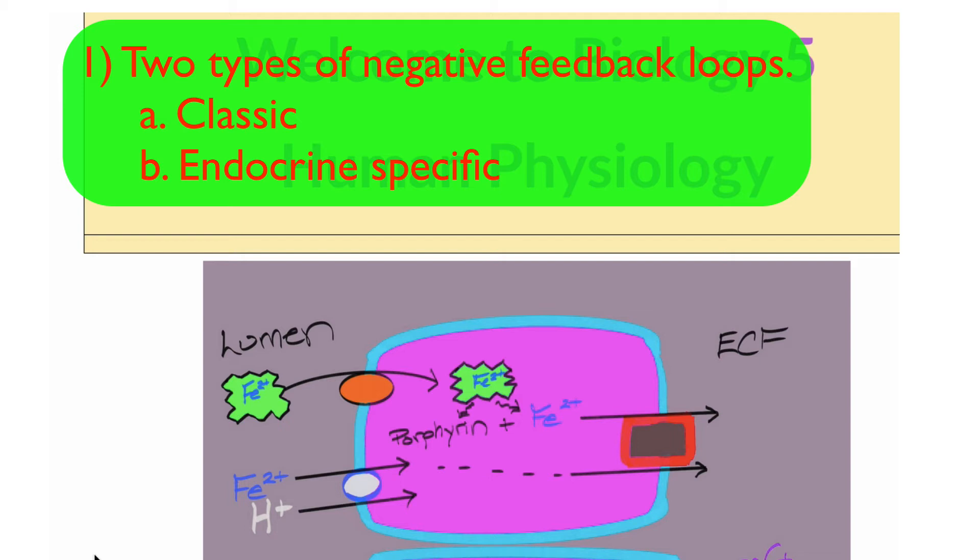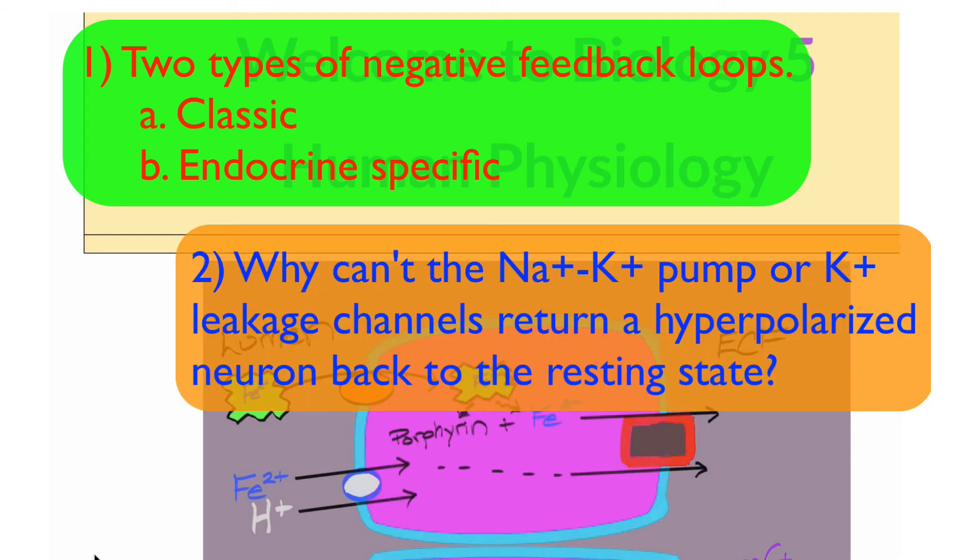Another option for the essay question will be explaining why the sodium-potassium pump nor the potassium leakage channels allow for the movement from the hyperpolarized state in a neuron at negative 90 back up to the resting state at negative 70. So once again, the question is, why can't the sodium-potassium pump or potassium leakage channels move the cell voltage from negative 90 back up to negative 70? That's your second option for a question.